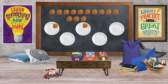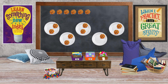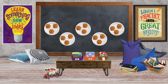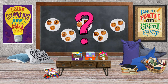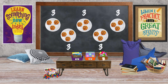One, two, three, four, five, six, seven, eight, nine, ten, eleven, twelve, thirteen, fourteen, fifteen. Let's look at our plates. How many cookies on each plate? There are three on each.